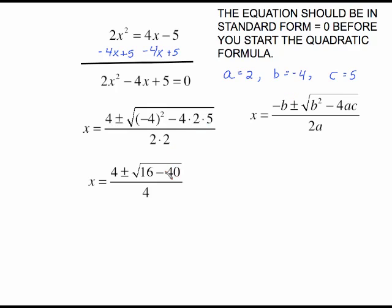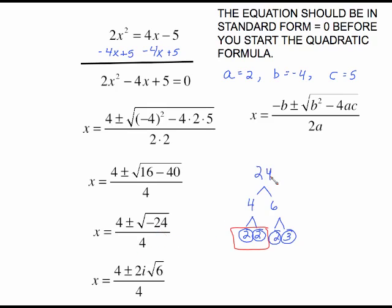Clean up inside the radical. Negative 4 squared is 16. 4 times 2 times 5 is 40. 16 minus 40 is a negative 24. Two things here because it's the square root of a negative that means there's an i that's going to come out. Also we need to do a factor tree on the 24.